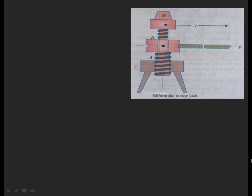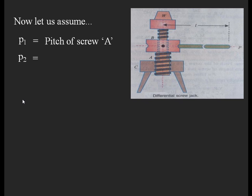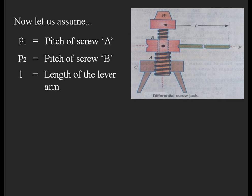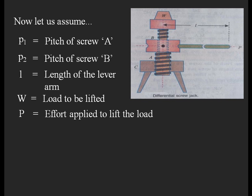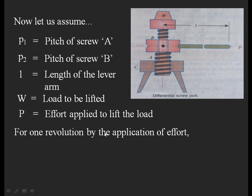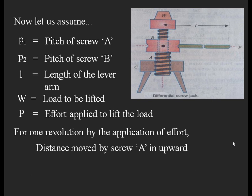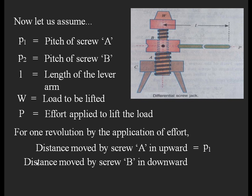Let us define the variables: p1 is the pitch of screw A, p2 is the pitch of screw B, l is the length of the lever arm by which we apply the effort to rotate screw A, W is the load to be lifted, and P is the effort applied to lift the load. For one revolution, the distance moved by screw A in the upward direction equals p1, its pitch value.